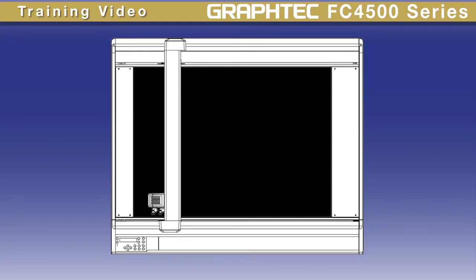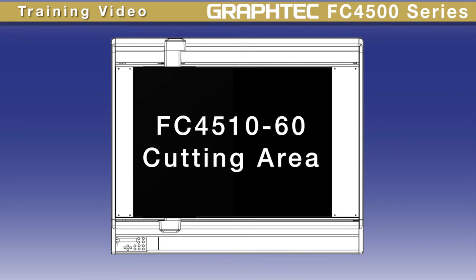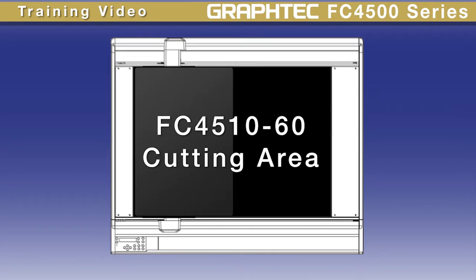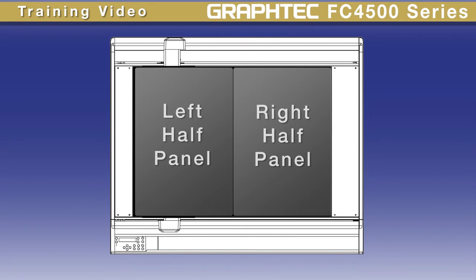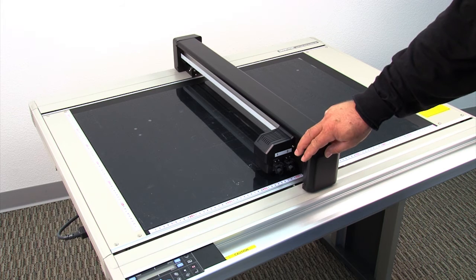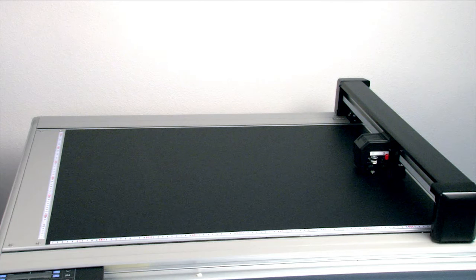When looking at the table, the cutting area for the FC 4510-60 is this area. The adhesive sheets or mats each come with two sections that will cover the left half and the right half of the cutting area of the table. Move the Y-bar by slowly moving the Y-arm to the far right of the table. This will provide room to place the first mat.